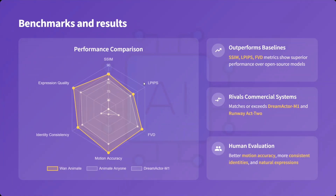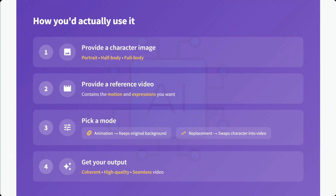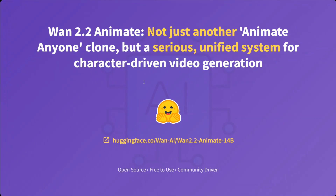On benchmarks, it has outperformed baselines across metrics including SSIM, expression quality, LPIPS, and identity consistency. It beats out prior models like DreamActor and Animate Anyone. Why it matters: it is a complete open source solution with no compromises — it handles body, face, and environment together. Developers can build on top of it, quality rivals proprietary models, and there are no API wait times. To use it, provide a character image, provide a reference video, pick either Replacement or Animation mode, and get your output. The model weights are available and you can check the URL for usage.